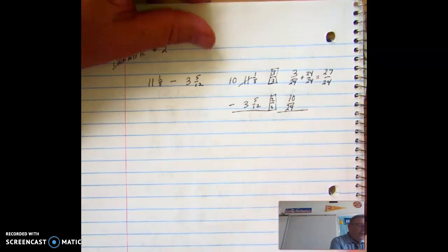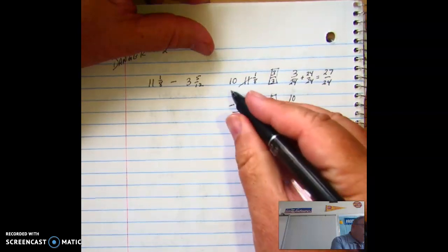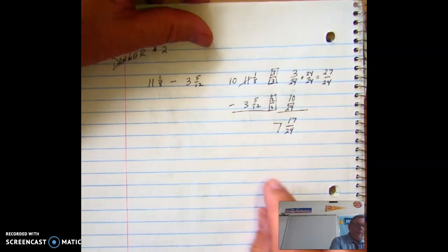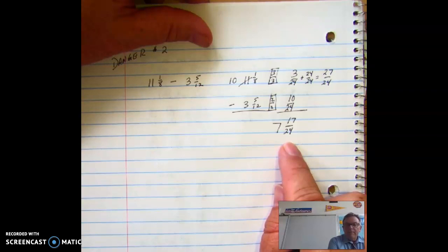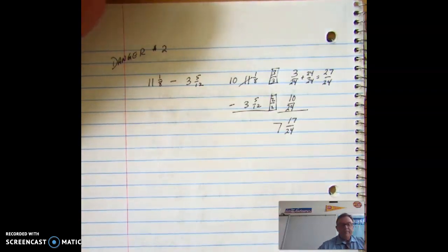Don't forget the whole number is 10 minus 3, it's 7. One last step. Can I simplify this? No. I'm done. Okay. Watch out for those dangers. Let's go. Thank you.